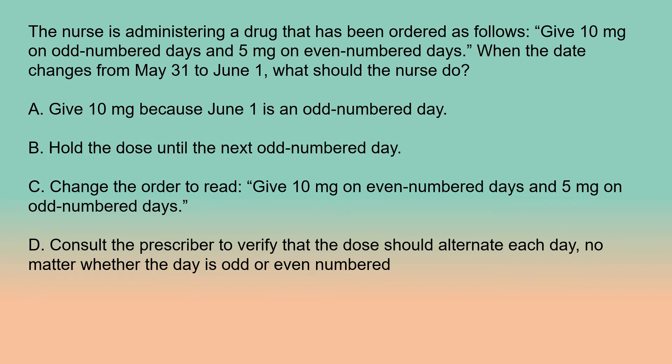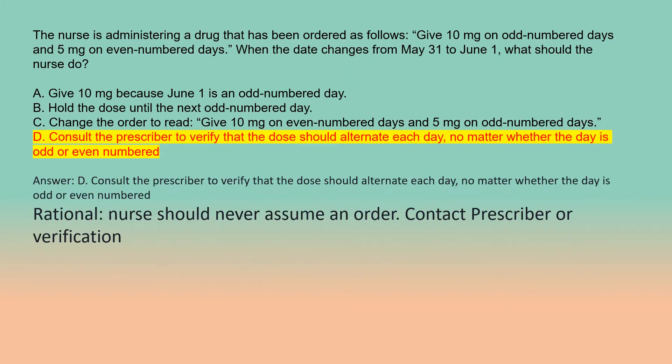The nurse is administering a drug ordered as follows: give 10 mg on odd-numbered days and 5 mg on even-numbered days. When the date changes from May 31st to June 1st, what should the nurse do? A. Give 10 mg because June 1st is an odd-numbered day. B. Hold the dose until the next odd-numbered day. C. Change the order to read: give 10 mg on even-numbered days and 5 mg on odd-numbered days. D. Consult the prescriber to verify that the dose should alternate each day, no matter whether the day is odd or even-numbered. Answer: D. Consult the prescriber to verify that the dose should alternate each day, no matter whether the day is odd or even-numbered.